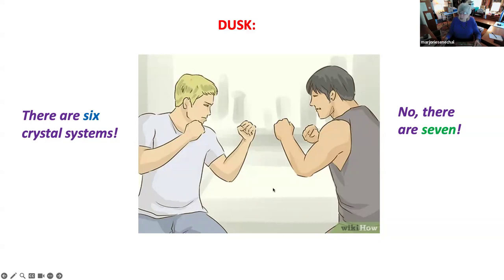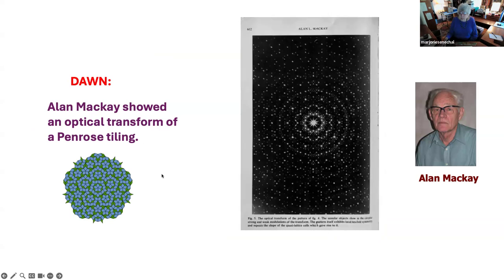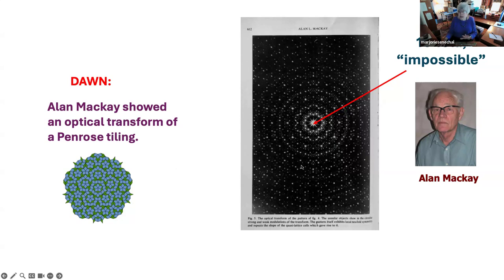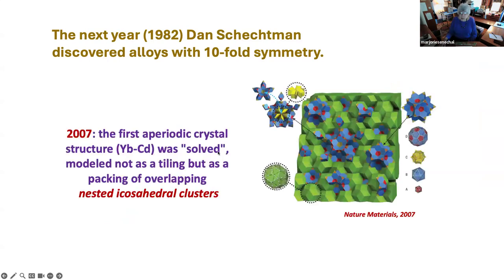And then at that very same conference, Alan Mackay showed an optical transform of Penrose tiling. You notice that's tenfold — which is impossible according to the crystallographic restriction — but there were nice bright spots and tenfold symmetry. What on earth could that mean? Everybody knew that the Penrose tiling was not periodic. So that must mean that periodicity was not everything we need to understand about order in nature or in materials. This was the dawn of a new era. The very next year, Dan Shechtman discovered alloys with tenfold symmetry.